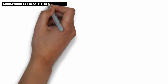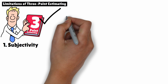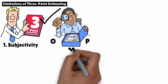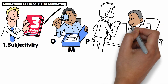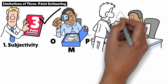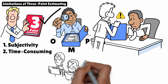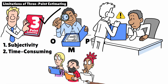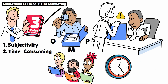As helpful as it is, three-point estimating isn't perfect. One: subjectivity — the estimates for optimistic, pessimistic, and most likely scenarios can be subjective, relying heavily on the experience and judgment of the estimators, which can sometimes lead to inaccuracies. Two: time-consuming — since it requires the team to create three estimates for every task or activity, three-point estimating can be more time-consuming than simpler estimation methods. For large or complex projects, this added complexity might not always be practical.